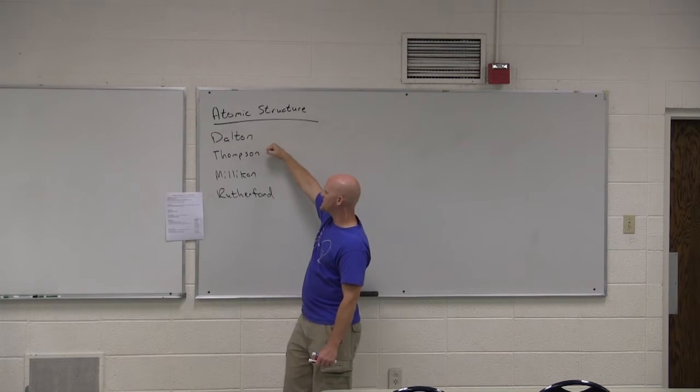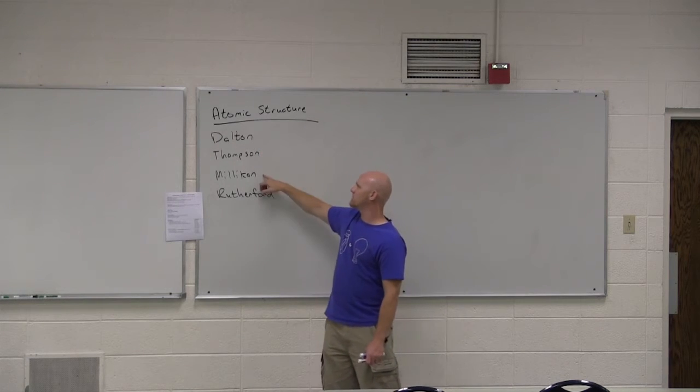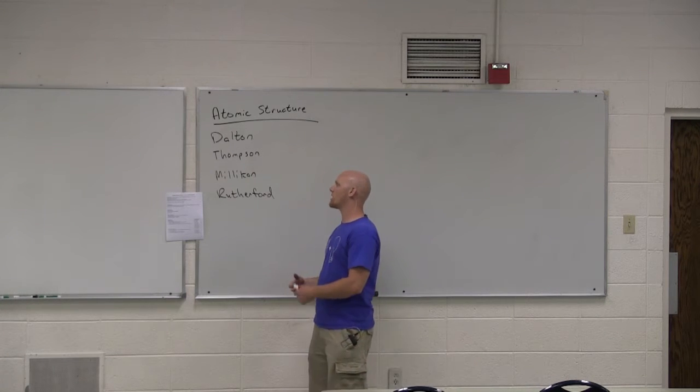Now, Mr. Thompson here, J.J. Thompson, he discovered the electron. So using a cathode ray tube, Mr. Milliken here actually figured out the mass of an electron in his classic oil drop experiment.